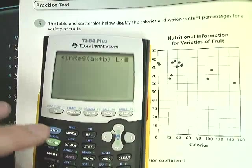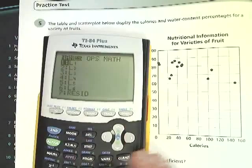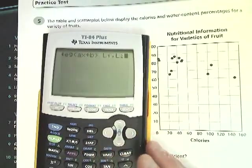So the list button, pick L1. And the other one, the other set is L2. So second stat, L2. Then I can hit enter.